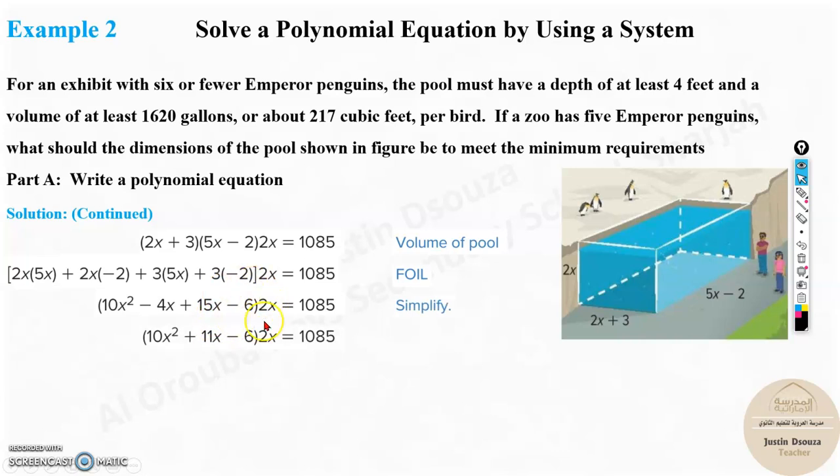And this can be multiplied further. And then, you will be getting, over here, now they have simplified, minus 4 plus 15 is positive 11. Now, you can multiply this inside. What happens? It will be 20x cubed, because 2x is multiplied. Over here, it will be 22x squared. And lastly, you will have negative 6 times 2 is 12x. That is equal to 1085.